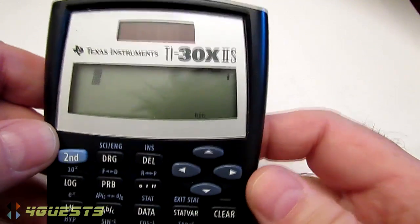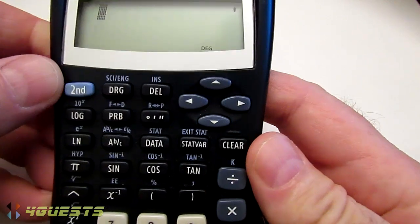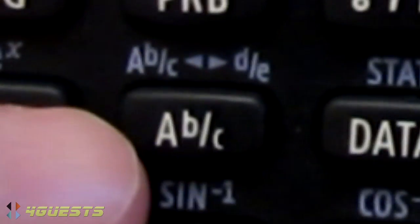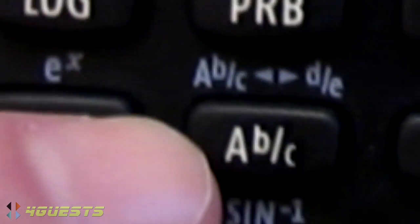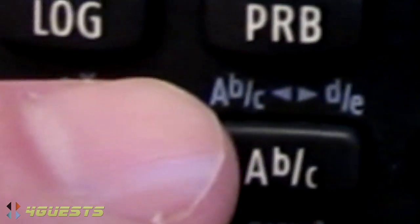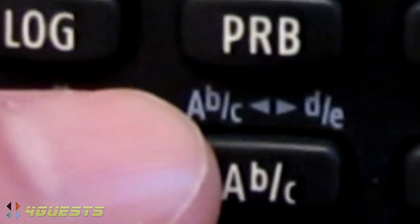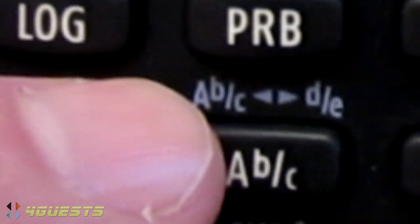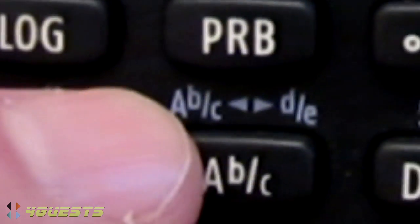On the TI-30X, the fraction button is located right here. It's the AB over C button, and we also have a second line which would give you the improper fraction equivalent to an answer.